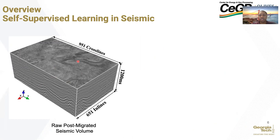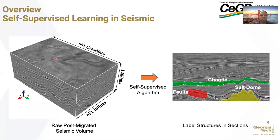In our self-supervised learning framework, we want to feed a raw seismic image and be able to detect important geological structures in it. As shown on the right, we want our self-supervised algorithm to detect important structural features in various sections of the F3 block, then combine these various sections into a volume. Here we have a chaotic structure, a salt dome, and facies labeled. This is the kind of annotation we desire our self-supervised algorithm to provide.